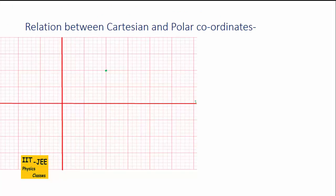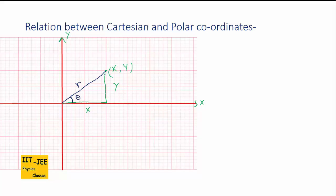Now, what is the relation between Cartesian and polar coordinates? For a point with x-axis and y-axis, in Cartesian coordinates we take the horizontal distance x and the vertical distance y. But in polar coordinates, we draw the line from the origin — its length is r and its angle from the x-axis is theta. We now need to relate r, theta, x, and y using trigonometry.